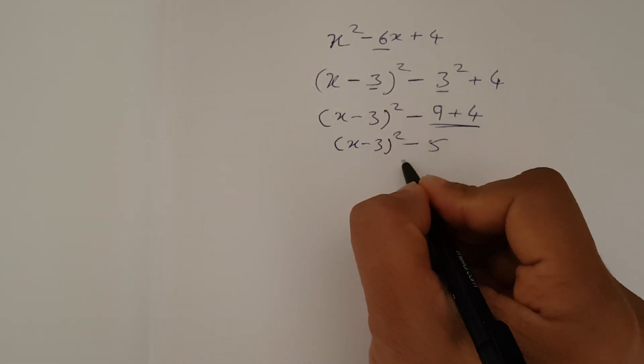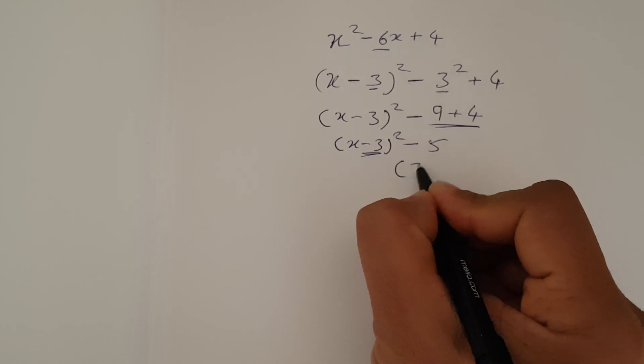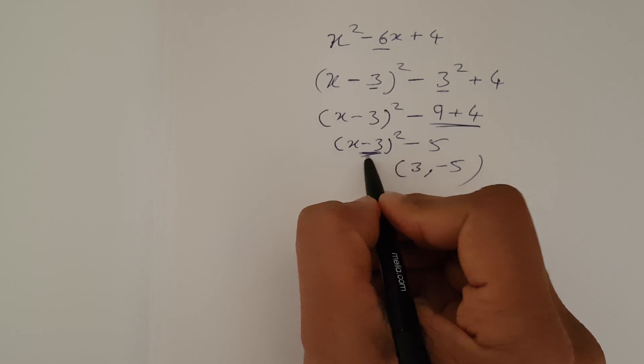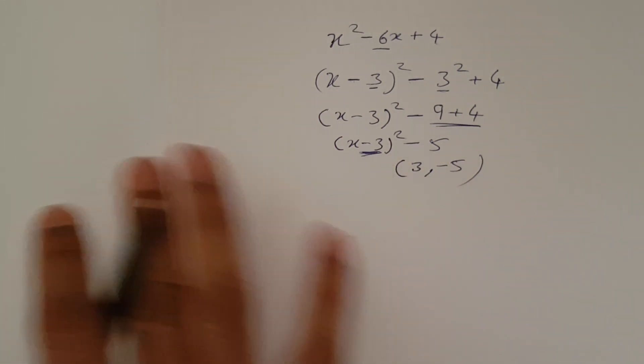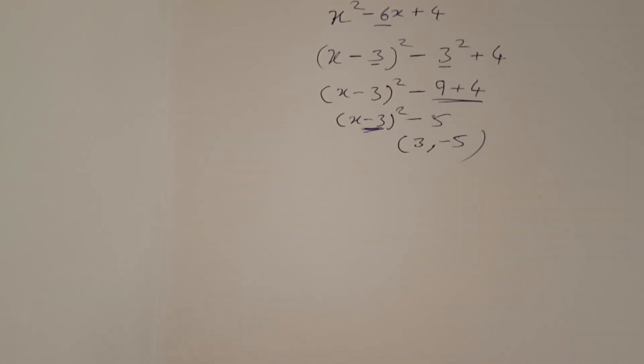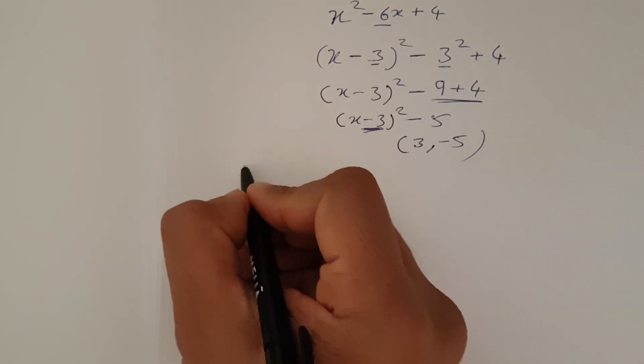So the coordinate, what we got with that is, if this is minus 3, it will be just 3, comma, minus 5. Always opposite sign with that. That's completing the square, solving quadratic equation with the completing the square. I'll do one more problem for you with the number in front of x square.